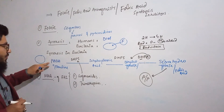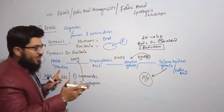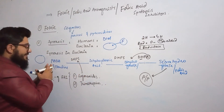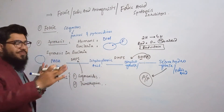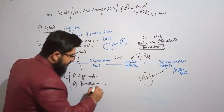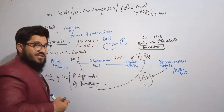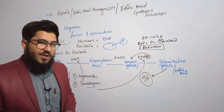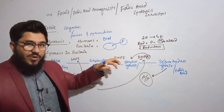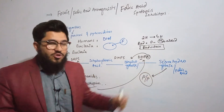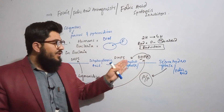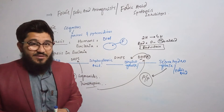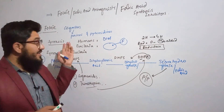Because sulfonamide occupies dihydropteroate synthase, para-amino benzoic acid won't interact with pteridine, and dihydropteroic acid won't be synthesized — folic acid synthesis is stopped. Then we have trimethoprim, which targets dihydrofolate reductase. Even if bacteria have synthesized dihydrofolate, trimethoprim will interact with dihydrofolate reductase, preventing the conversion of dihydrofolate to tetrahydrofolate. So folic acid won't be synthesized, and without this cofactor, purines and pyrimidines won't be synthesized.